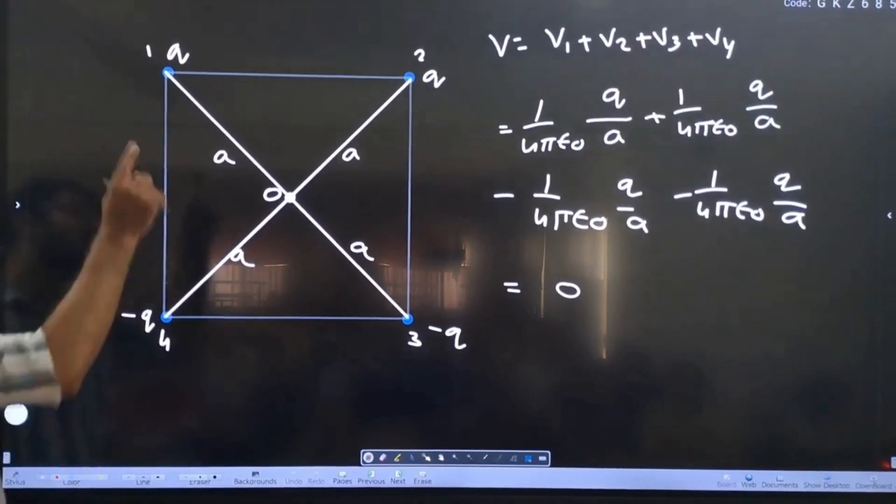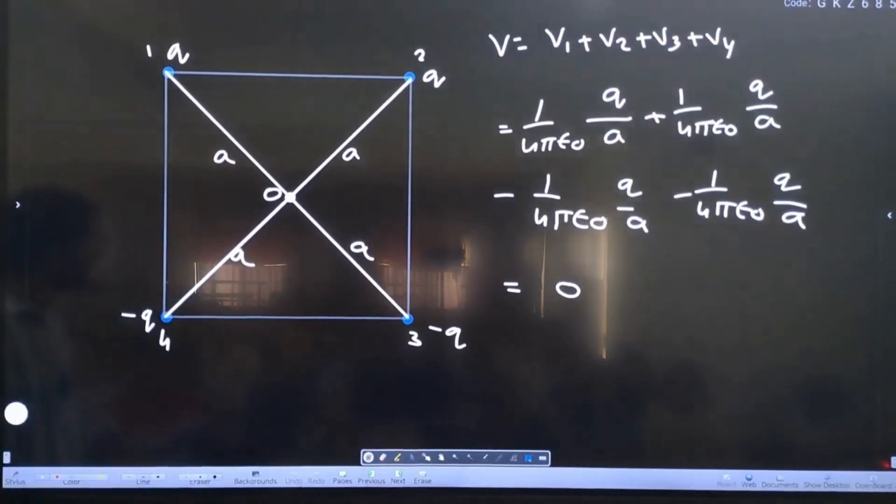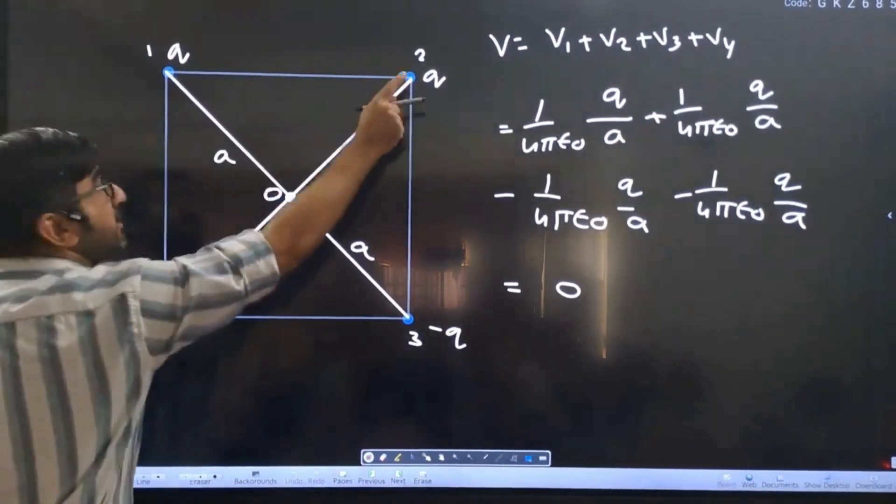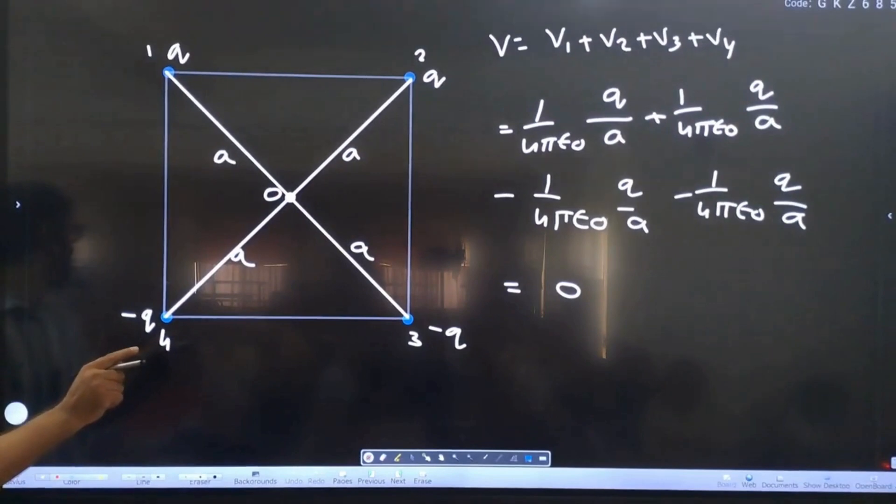If diagonally the same charges are there, then q - q + q - q is going to be zero.